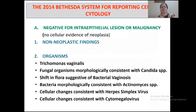The term 'infection' was replaced by 'organism' in the 2001 Bethesda system for reporting cervical cytology, because mere presence of organisms does not always indicate clinical infection, and clinical management is guided by signs and symptoms in most cases. Although identification of organisms is not the primary aim of the Pap test, it is an added benefit that can be helpful clinically.